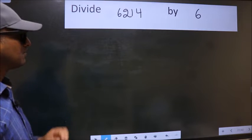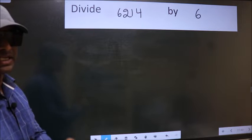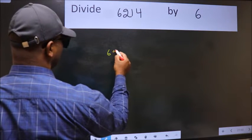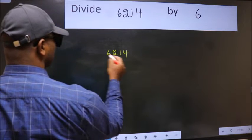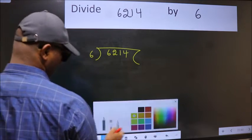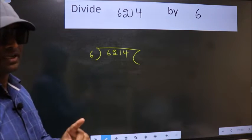Divide 6214 by 6. To do this division, we should frame it in this way. 6214 here, 6 here. This is your step 1.